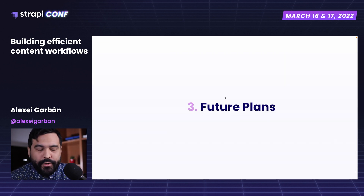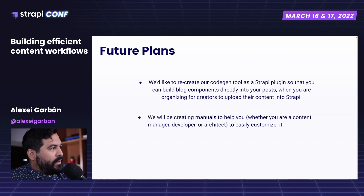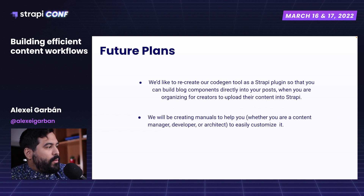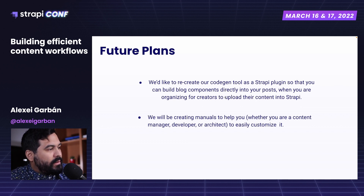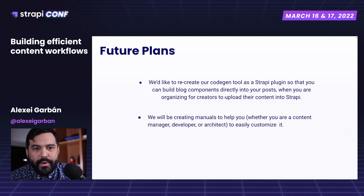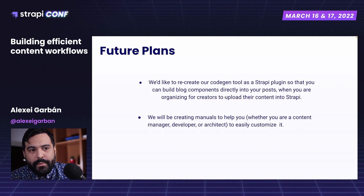What are our future plans? We would like to recreate our code into a Strapi plugin so that you can build blog components directly into your post when organizing content in Strapi. We will also create a manual to help content managers, developers, or architects easily customize it. This tool is open source, and we would like any developer to start playing with it, create new components, share, and contribute — because we want to give back to the open source community.